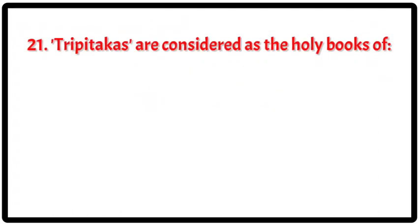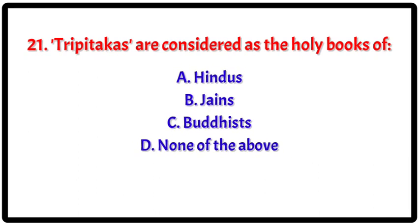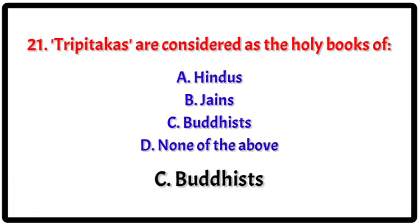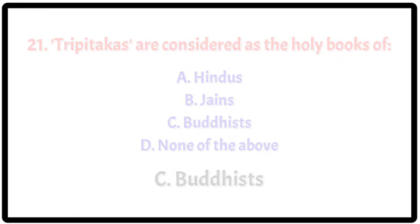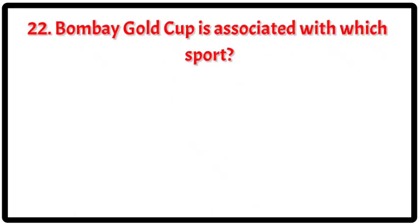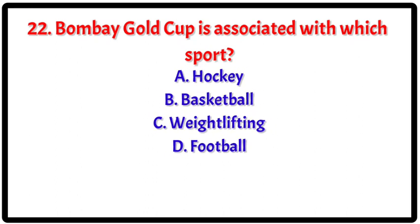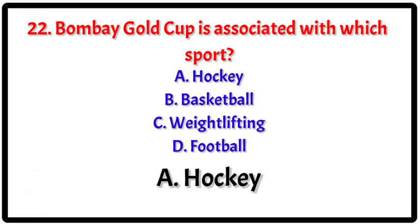Question 21: Tripitakas are considered as the holy books of which religion? Your options. The correct answer is C — Buddhist. Question 22: Bombay Gold Cup is associated with which sport? Your options. The correct answer is A — Hockey.